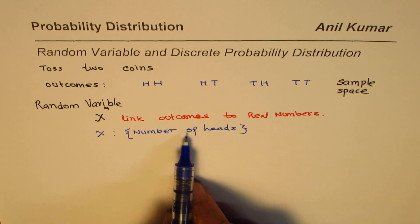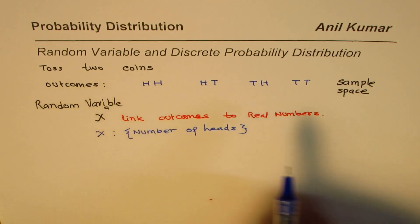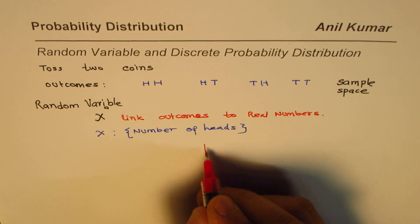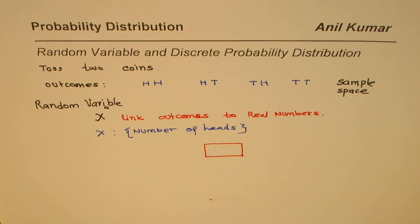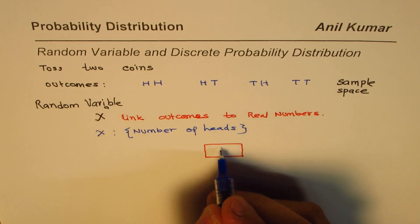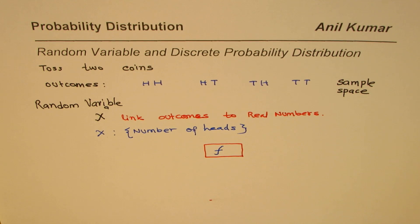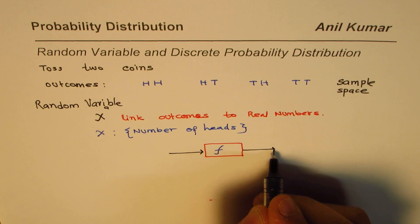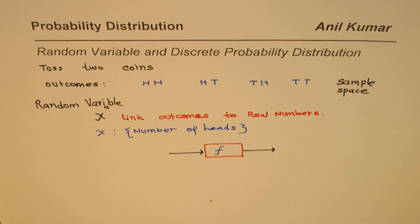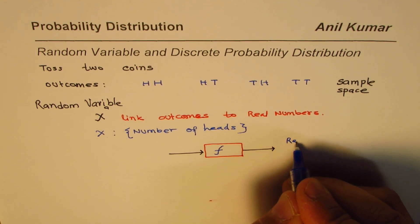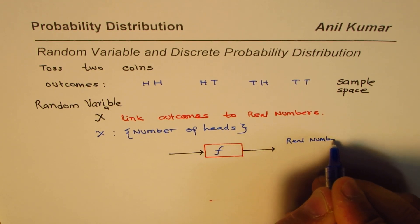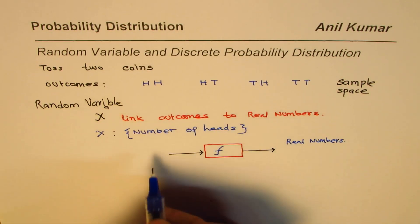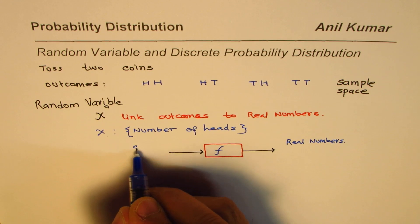The inputs to this function are the outcomes from the sample space. Let me show it here — we have a function F with inputs and an output. The output will always be real numbers, and the input is the outcomes from the sample space.